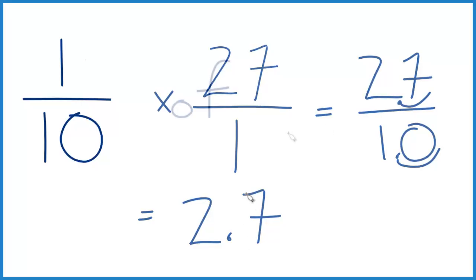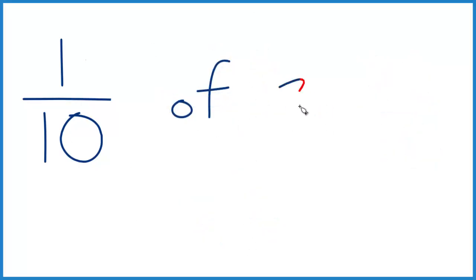Let's try another quick one. So what if you're taking one-tenth of 3.5? Well, same thing, right? Instead of of, we multiply. We're gonna call it 3.5 over 1, so everything lines up.